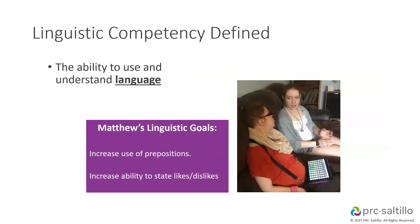Let's start with linguistics. The ability to use and understand language is that linguistic competency — this includes all areas of language: understanding and using language broadly. For Matthew, his linguistic goals are to increase the use of prepositions and to increase his ability to state his likes and dislikes.